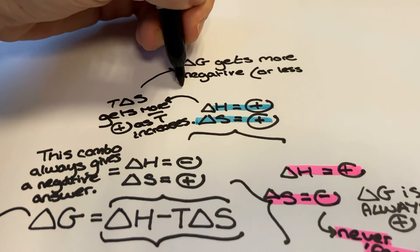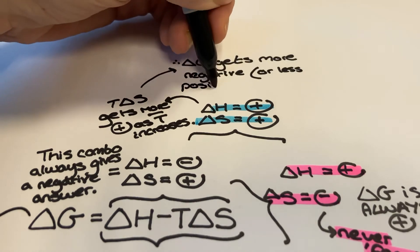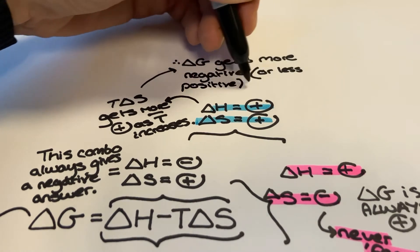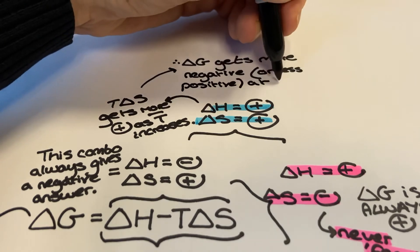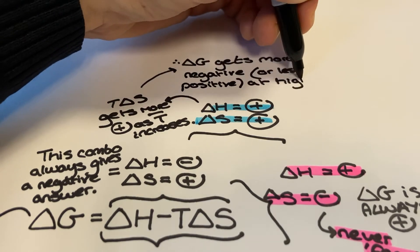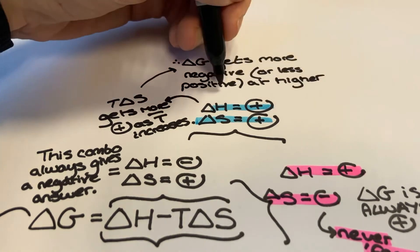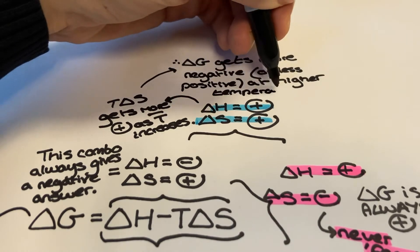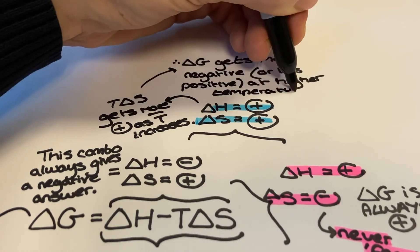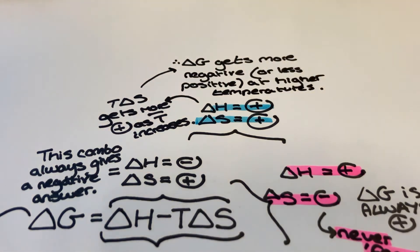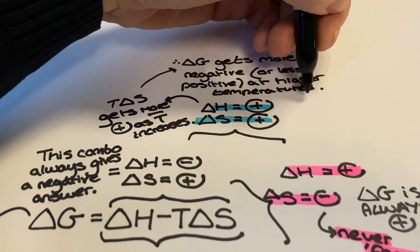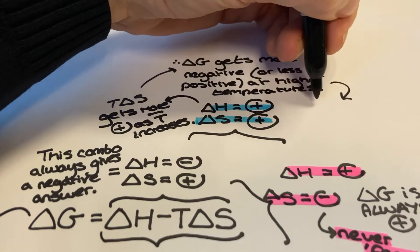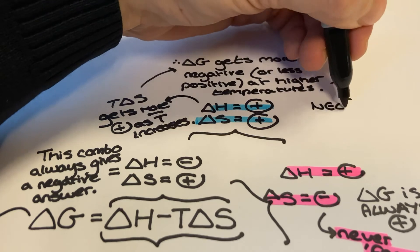For this combination, we can set delta G in the free energy equation to zero and rearrange the equation once again as delta H over delta S equals T, to calculate the temperature at which the feasibility of the reaction changes. Since the feasibility of this reaction increases with increasing temperature, we may hear this temperature referred to as the minimum temperature at which the reaction is feasible.